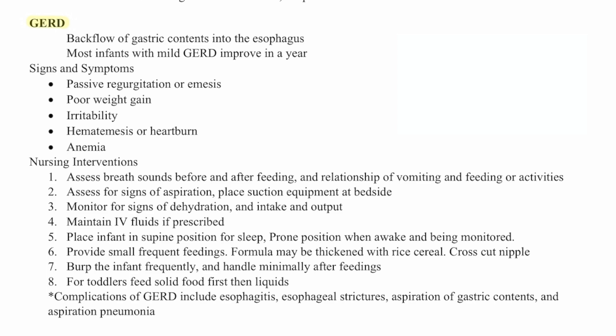Place suction equipment at bedside. Monitor for signs of dehydration, intake and output, and IV fluids if prescribed. Place infant in supine position for sleep and prone position when awake and being monitored. Provide small frequent feedings — formula may be thickened with rice cereal and the nipple can be cross-cut. Burp the infant frequently and handle minimally after feedings. For toddlers, feed solid foods first, then liquids.